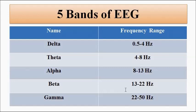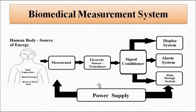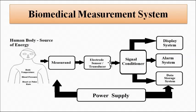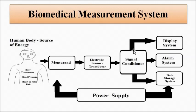This is the basic biomedical measurement system where the brain potential generated by the neuron is measured with the help of a suitable electrode transducer, which converts it into a suitable voltage or current signal. Then it is fed to the signal conditioner processor for various purposes such as amplification, frequency response matching, filtering of noise signals, and linearization. Then it goes to the output unit which is used for display, storage, and alarm generation.